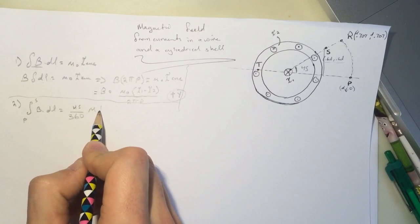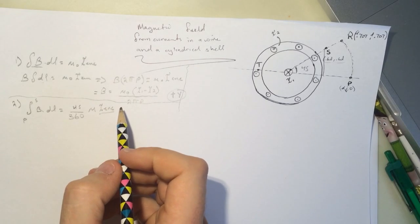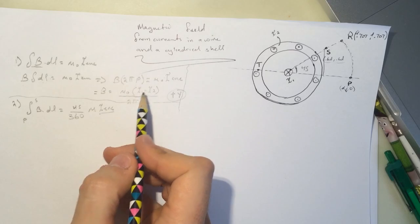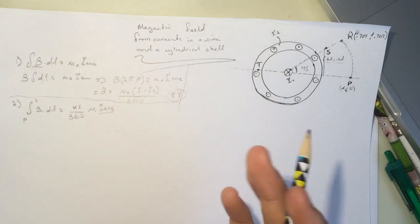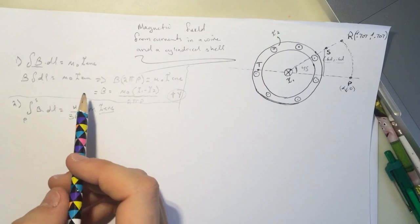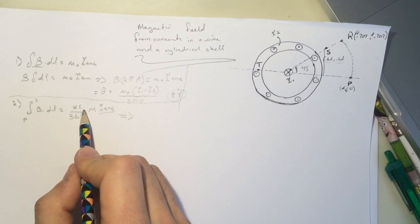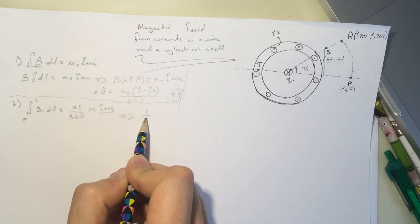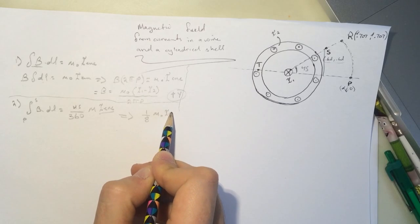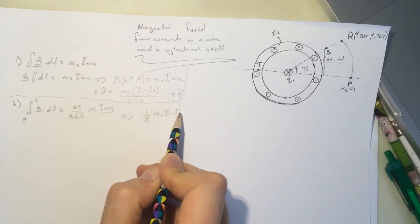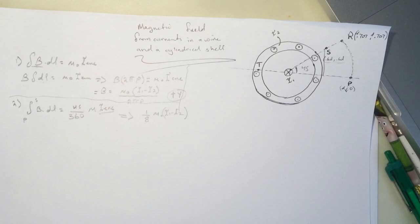And then mu I enclosed, and the I enclosed will be the same as the one before, which is I1 minus I2, and it's the same thing. For this you'll get, if you divide this by this, you'll get 1 over 8, mu naught I1 minus I2.